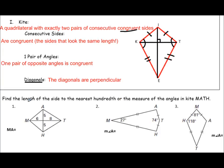Our first example asks us to find the length of MA, and it tells us that these are all kites. The property that's going to help us here is that in a kite the diagonals are perpendicular. So if we're looking for MA, what we have is a right triangle where we want to find the missing side — the hypotenuse — given two legs.